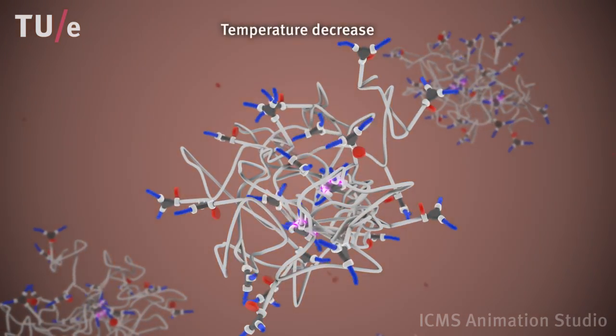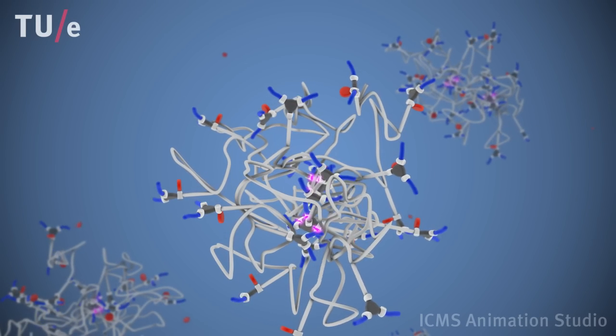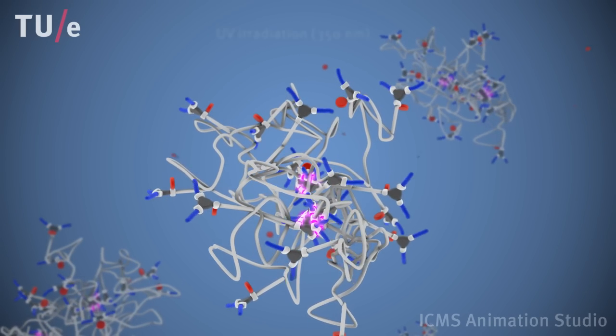A subsequent cooling step leads to self-assembly of the BTAs and folding of the polymer backbone. Self-assembled BTAs are illustrated with a purple glow.